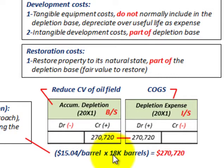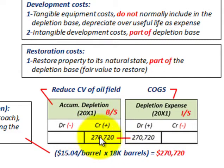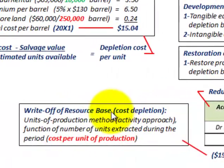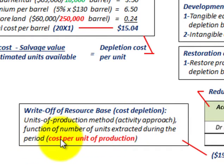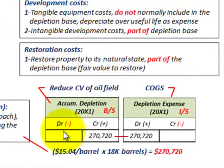The $15.04 per barrel times the 18,000 barrels extracted from the site for year 20X1 gives us a total depletion expense of $270,720. That goes into our accumulated depletion for this oil field for the year, and we recognize it as a depletion expense on our income statement — assuming we sold all these barrels. We use the units of production method, which is an activity approach and a function of the number of units extracted during the period. If we didn't have the sales, we probably wouldn't recognize the depletion expense.